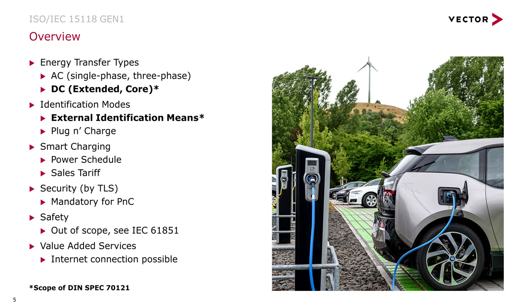Looking at Generation 1: included is AC charging and DC charging — AC single phase or even three phase. We have different identification means, including EIM and Plug and Charge types, as shown in earlier presentations. We have the smart charging part with power schedule and sales tariffs, the security aspect covered by TLS, and the option for value added services.